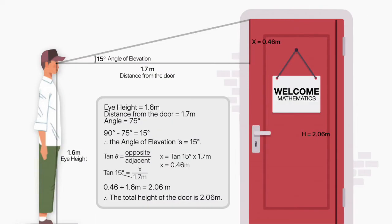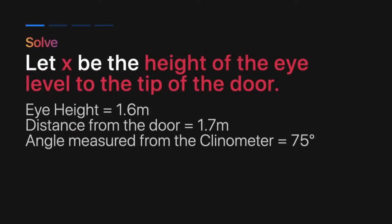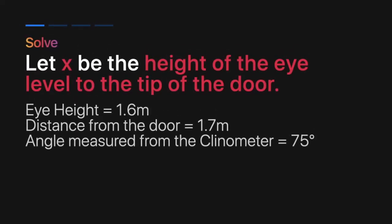Now, here's the illustration of the problem and let's start solving. Let x be the height of the eye level to the tip of the door. Eye height is equal to 1.6 meters. Distance from the door to my spot is 1.7 meters. And an angle of 75 degrees measured from the clinometer.